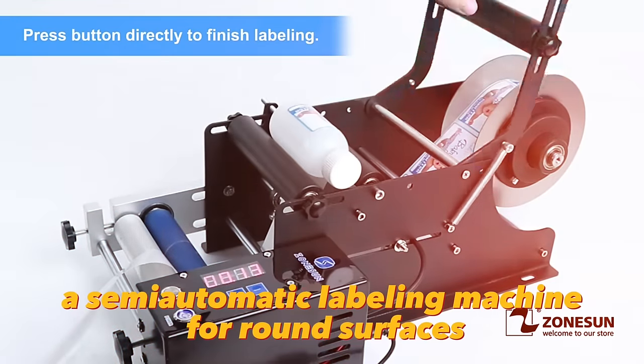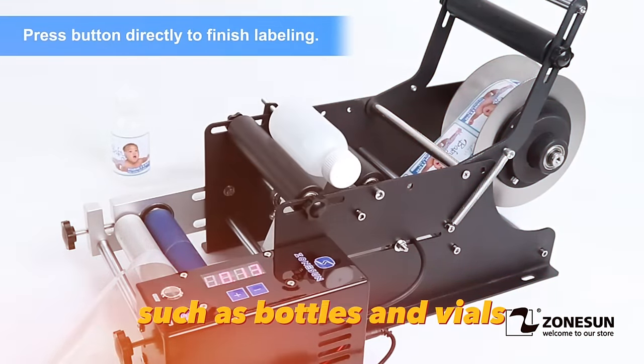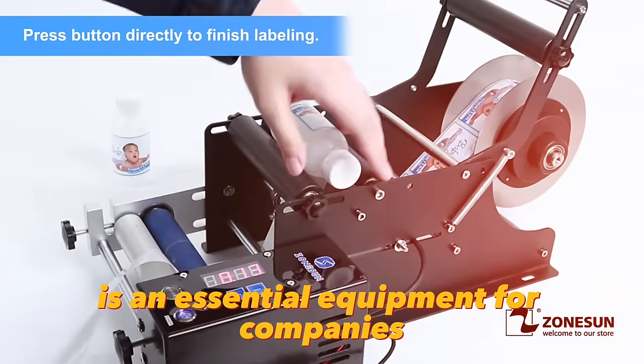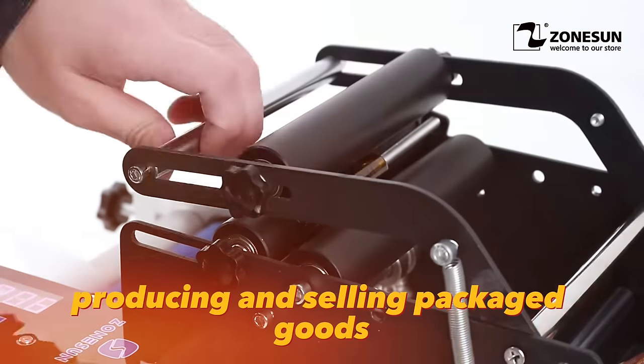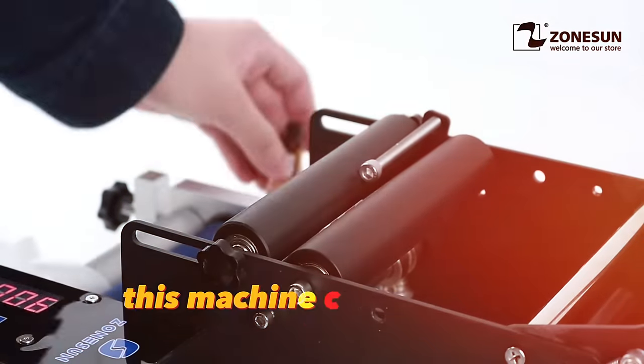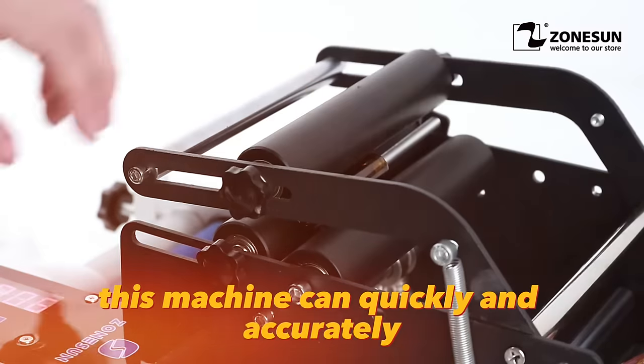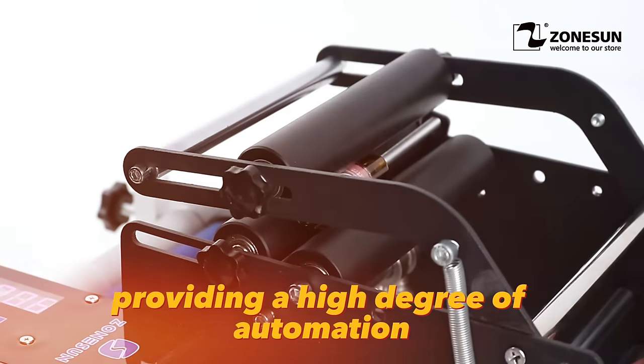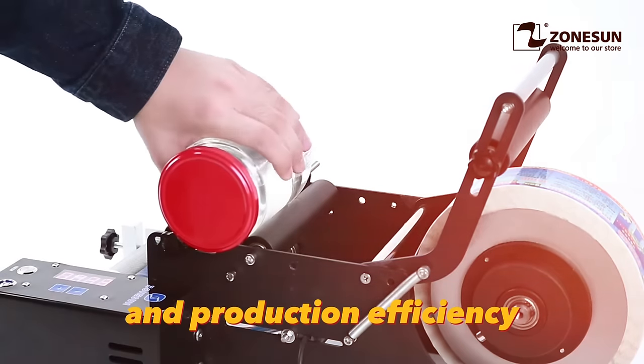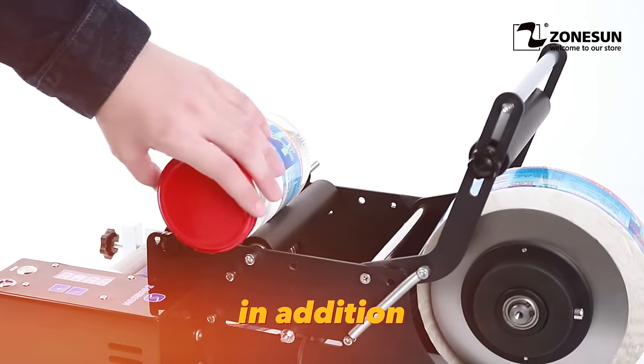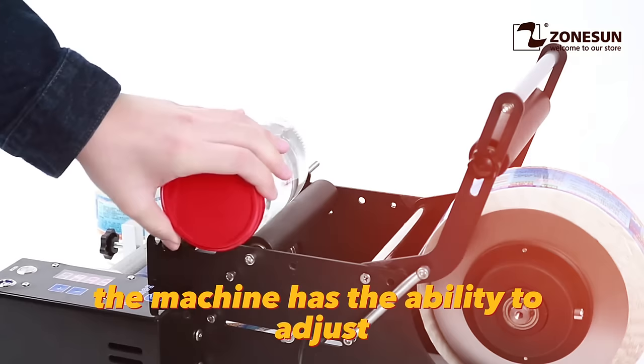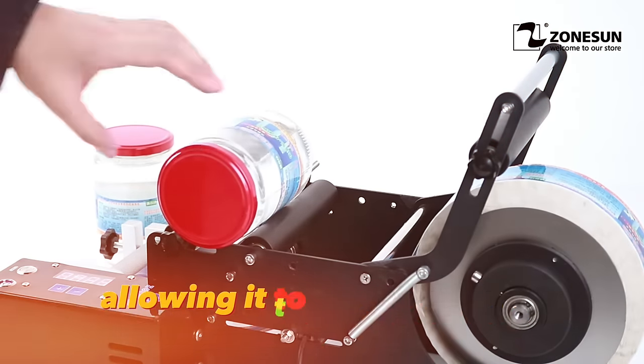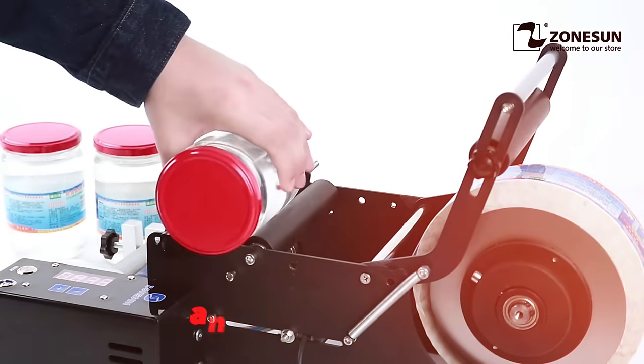Semi-automatic labeling machine for round surfaces such as bottles and vials is essential equipment for companies producing and selling packaged goods. This machine can quickly and accurately apply labels to various types of bottles and vials, providing a high degree of automation and production efficiency. In addition, the machine has the ability to adjust the speed of the label belt, allowing it to adapt to different sizes and shapes of bottles.